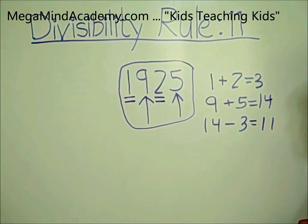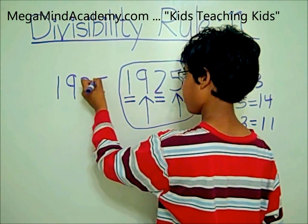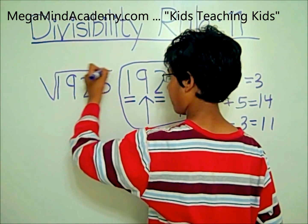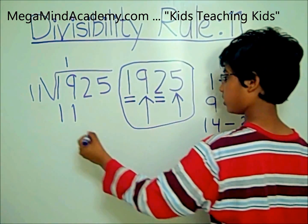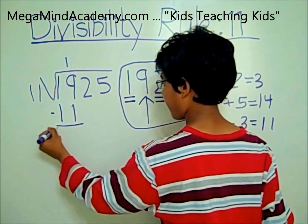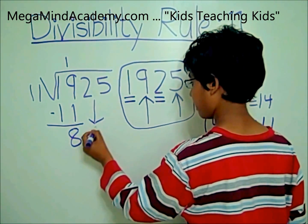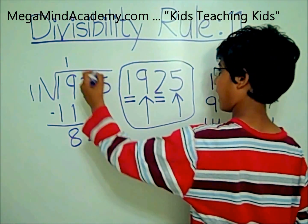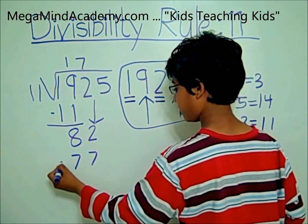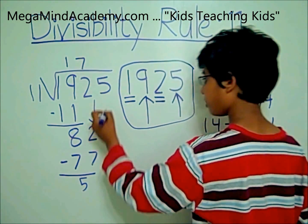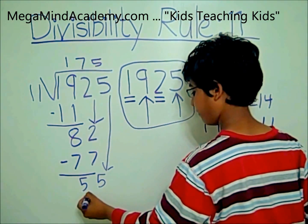Let's check. 1,925 divided by 11. 11 times 1 equals 11, so you subtract 11 from 19 and you get 8. Now you bring the 2 down and it becomes 82. And 11 times 7 equals 77, so you subtract 77 from 82 and you get 5.